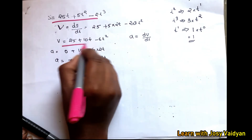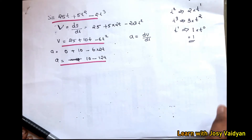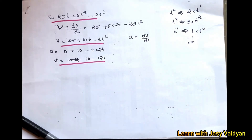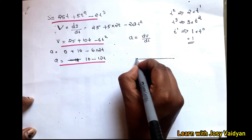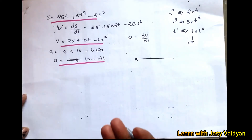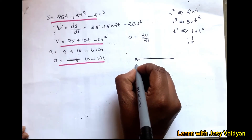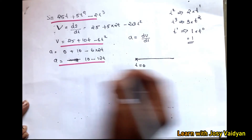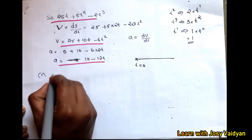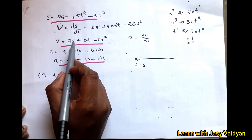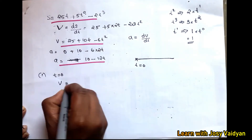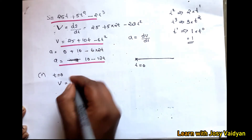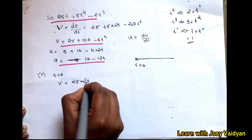Now we have the displacement, velocity, and acceleration equations. For the first question — velocity and acceleration at the start — we substitute t = 0. The velocity at the start is 25 meters per second. Similarly substituting t = 0 into the acceleration equation gives the acceleration at the start.